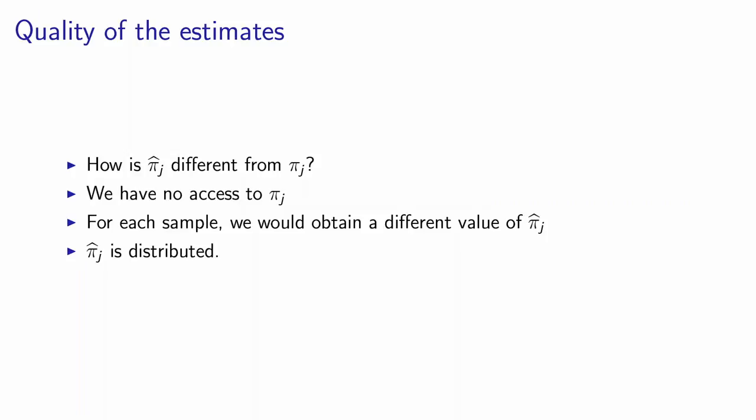Actually, each time you sample, you will obtain a different value for the estimate, for each different sample, because each sample is randomly drawn. Therefore, this value of the estimate is distributed. Each time you draw a sample, you get a different value for pi hat j.